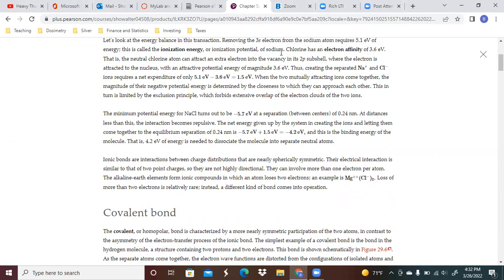That's called the ionization energy or ionization potential of sodium. Chlorine has an electron affinity of 3.6 eV. That is, the neutral chlorine atom can attract an extra electron into the vacancy in its 2p subshell.